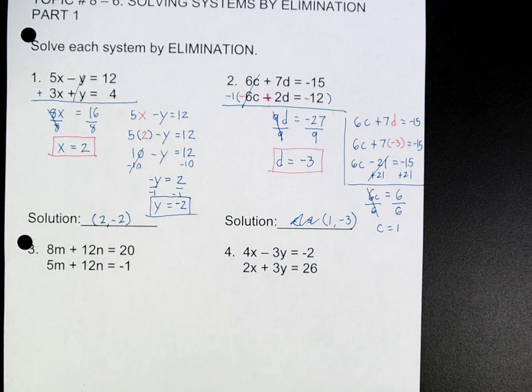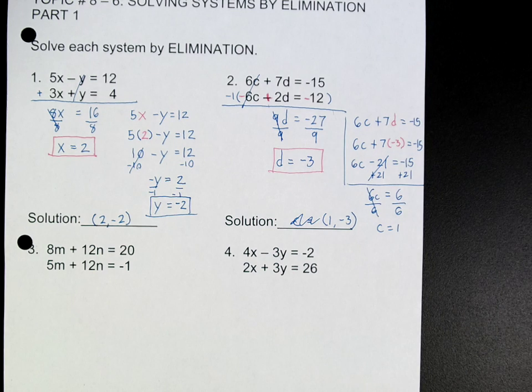I got this question last time, and for all of you that care, and you should: if you're writing the solution, you need to write them in alphabetical order. X comes before Y, so that's normally how you write it. In this one, c, d - you write c first and d second. Don't get that backwards.